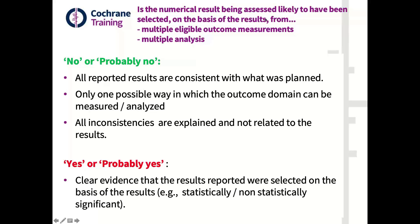When you have access to the statistical analysis plan or have access to the data and you're trying to answer whether the numerical result is likely to have been selected on the basis of the results, your answer will be probably no in three main situations. First, all the reported results are consistent with what was planned, so you're confident that they did not select the results, and this will move toward low risk of bias.